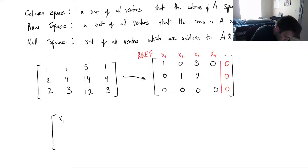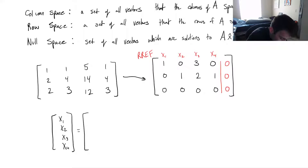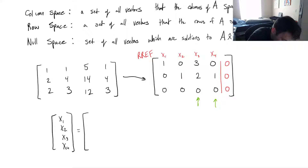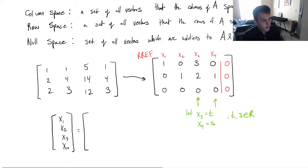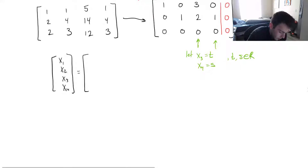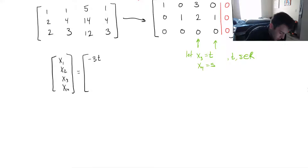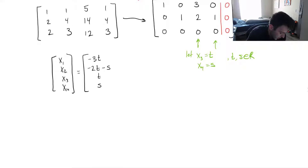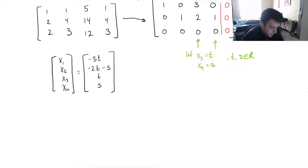We've got x1, x2, x3, x4. We know that x3 and x4 will both be free variables since there's no leading entries in those columns. So let's let x3 equal t and let's let x4 equal s, where t and s are real numbers. Reading our solutions off of this: x1 equals minus 3t, x2 equals minus 2t minus s, x3 equals t, x4 equals s. Any values of t and s will be solutions to Ax equals zero.